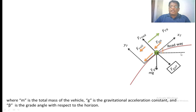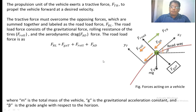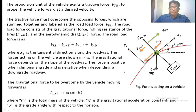A horizontal axis is taken, and the angle between the road and the horizontal is defined as beta, where beta is the gradient angle. The tractive force — the force experienced between the wheels and the road from the propulsion unit — must overcome the road load force. The gravitational force component in the tangential direction, Fgxt, equals mg sin(beta), where m is the mass of the vehicle, g is the gravitational acceleration, and beta is the gradient angle with respect to the horizontal.